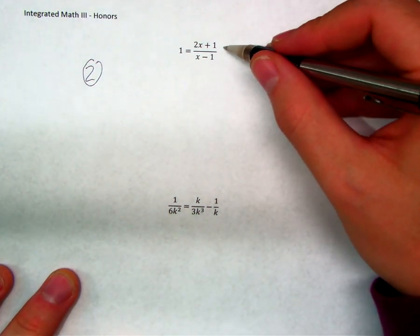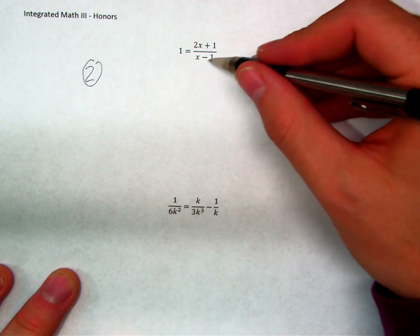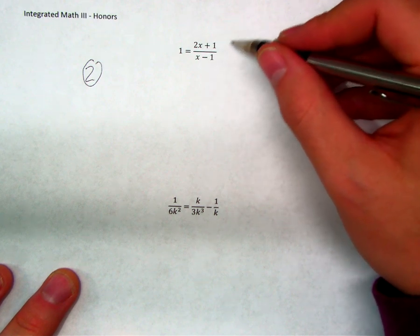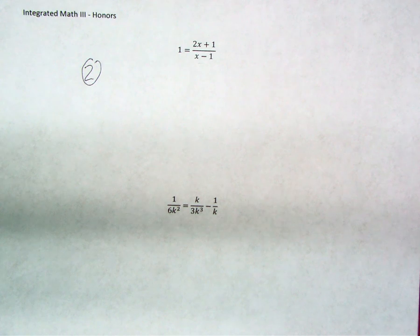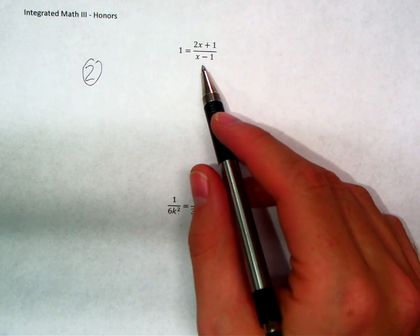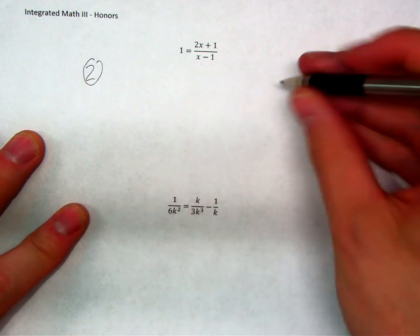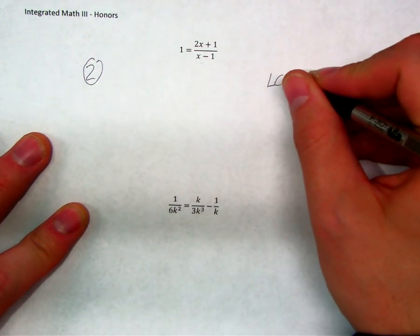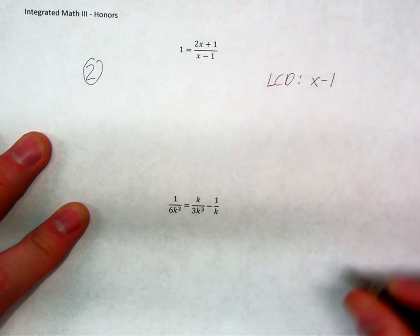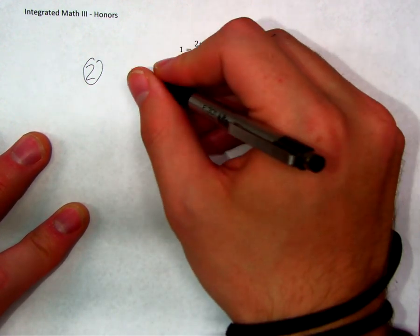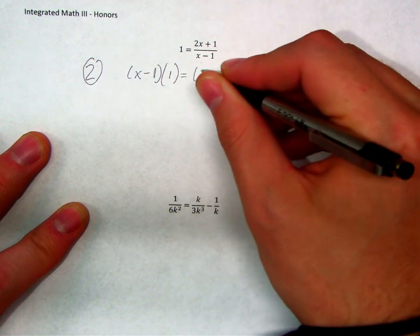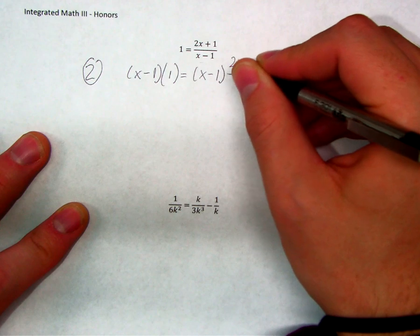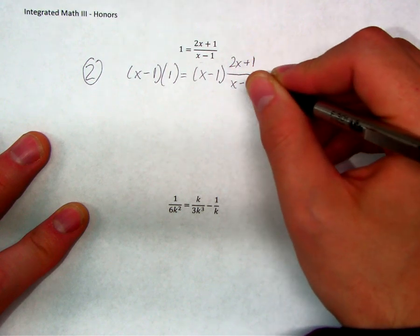There were two ways to get rid of all denominators. One was to cancel matching factors. Looking at this fraction, are there any matching factors? There would have to be an x minus one in the numerator to cancel with the x minus one in the denominator, and there's not. So we can't cancel matching factors. But we can multiply both sides of the equation by the least common denominator. When you only have one denominator, that denominator is the least common denominator.